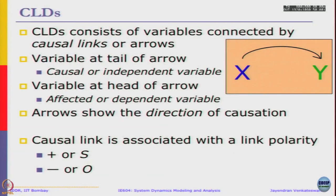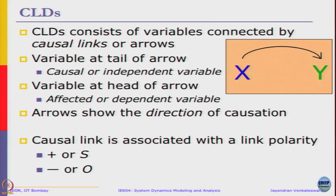To elaborate on the causal link, we associate it with link polarity. We use a symbol plus or minus: plus indicates a strengthening or same direction relationship, and minus indicates an opposite direction.